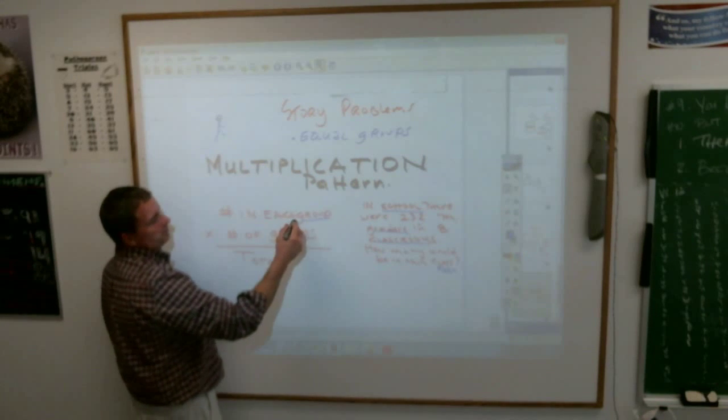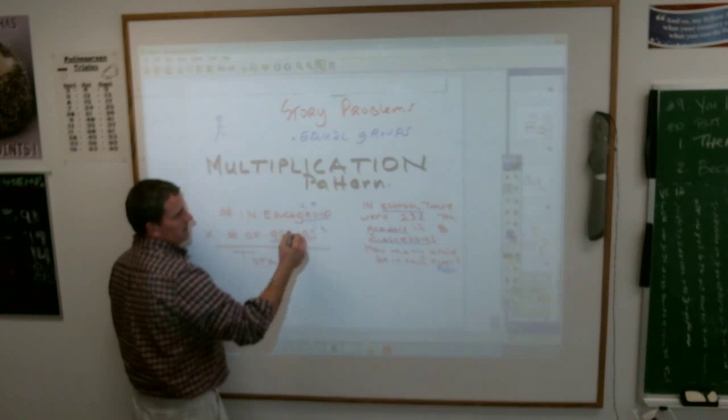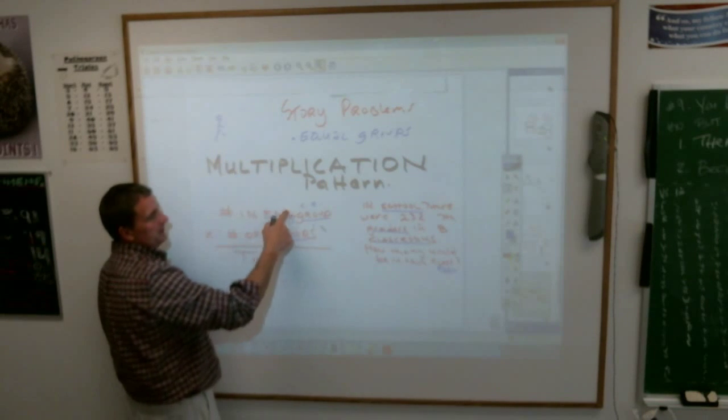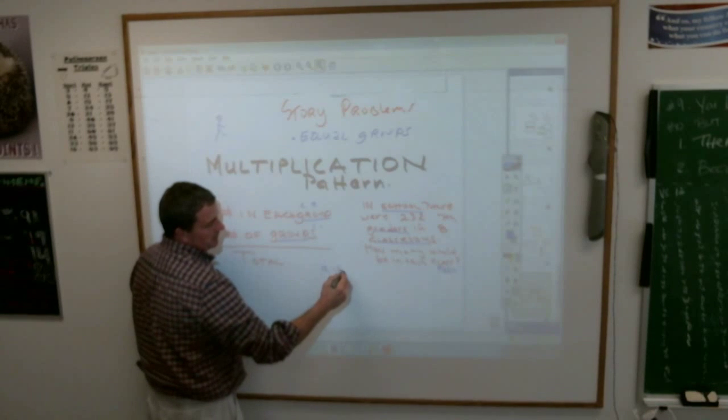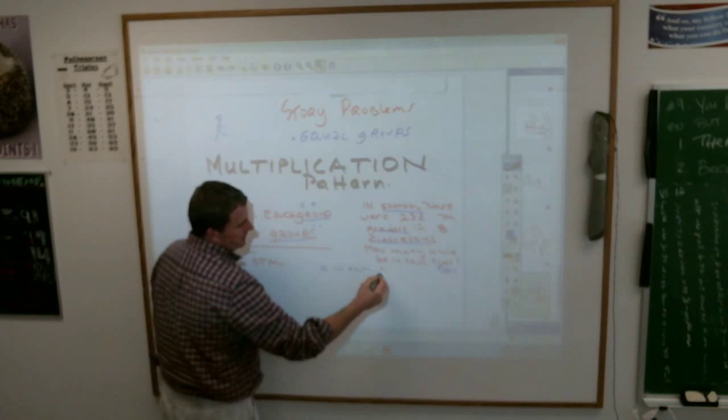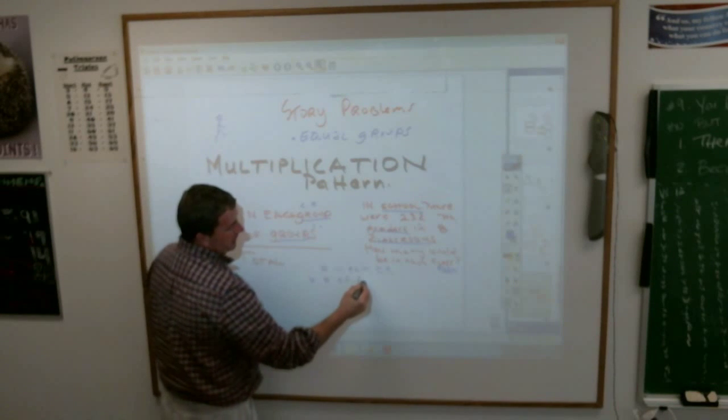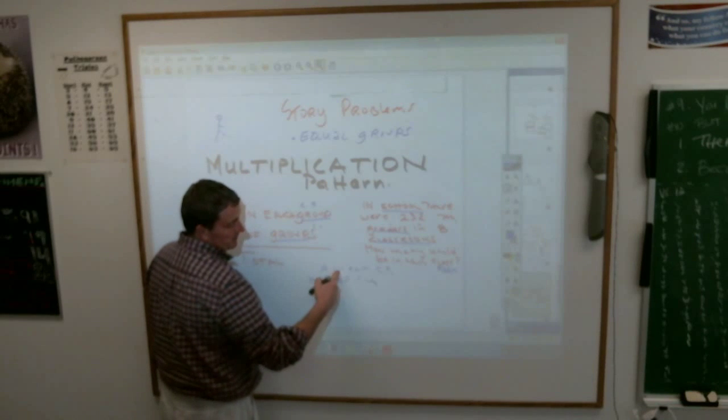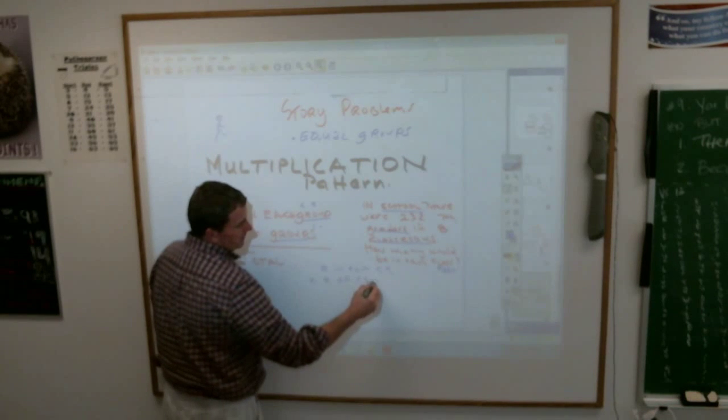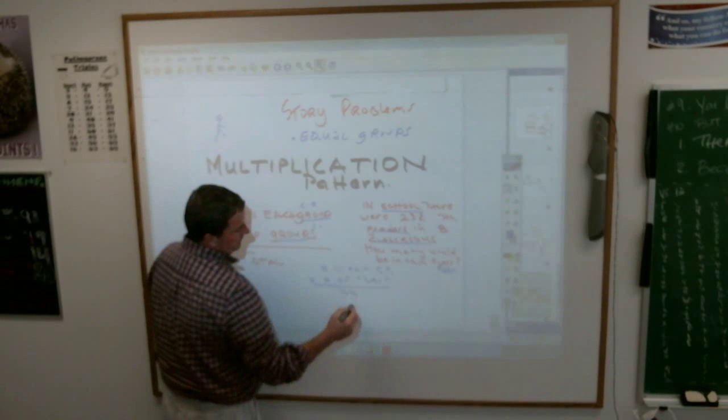So, instead of the word group, in this case, we're going to put the word classrooms. So, we need to know the number in each classroom. The number in each classroom times the number of classrooms. You know, that looks three-dimensional, doesn't it? Is that right, man? It's a little bit of two. You don't care. Equals the total number of students.